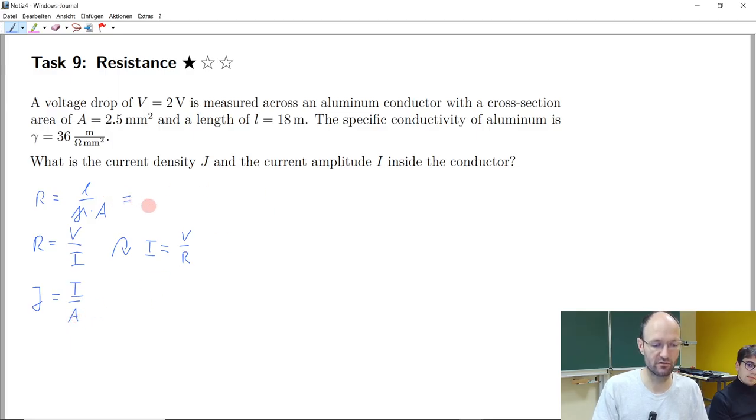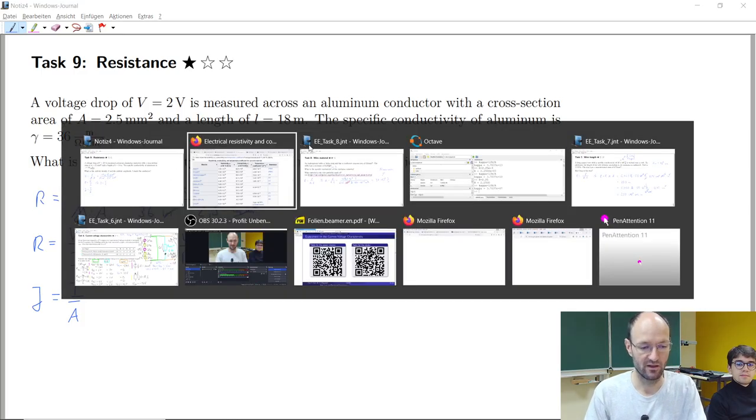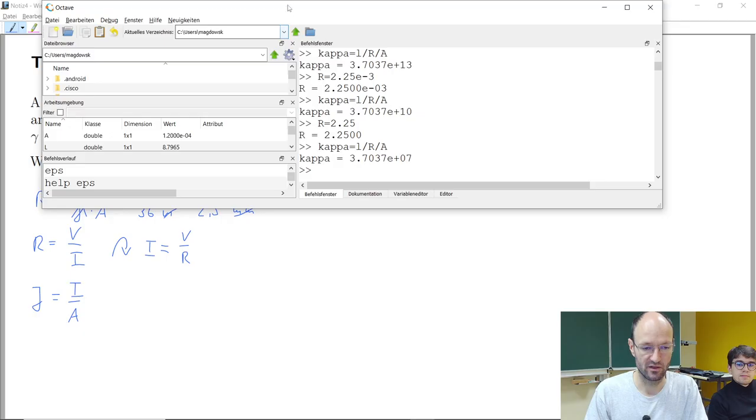So we can insert all the stuff and say this is 18 meter divided by this 36, 1 over ohm meter and 1 over millimeter square. And also insert this cross-section area of 2.5 square millimeters. And it's very convenient here that all the units will directly cancel. We will end up with ohm.